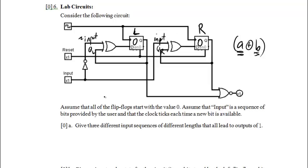We only get an output of one if both flip-flops are in state zero, so let's focus on the right one first since it has fewer tangled wires. We can draw a little DFA for the right one — it only has two states: zero or one, and it starts in state zero. On an input of zero starting in state zero, both inputs to the XOR are false, so the XOR is false and we stay in state zero.